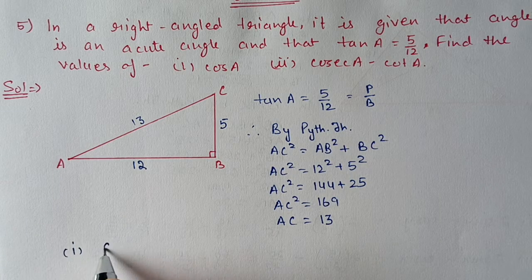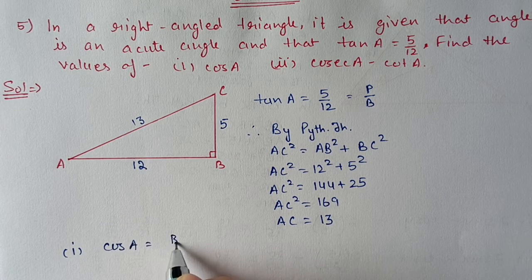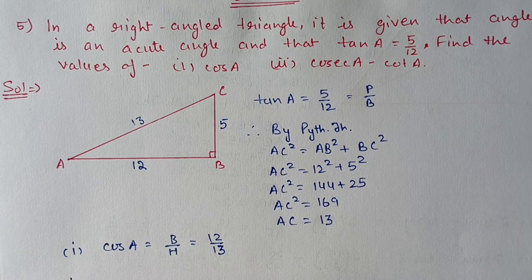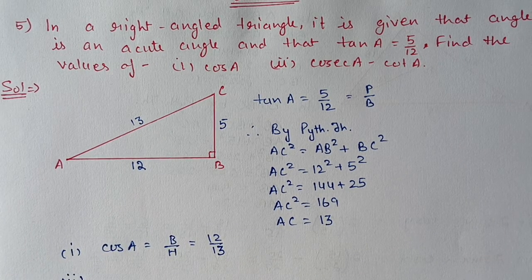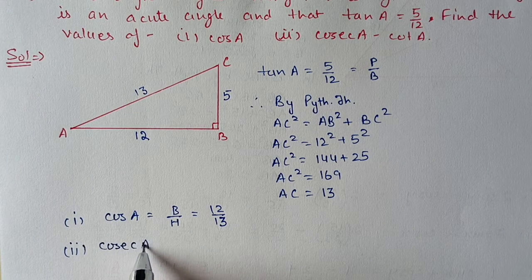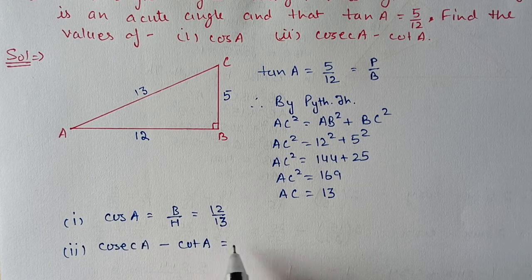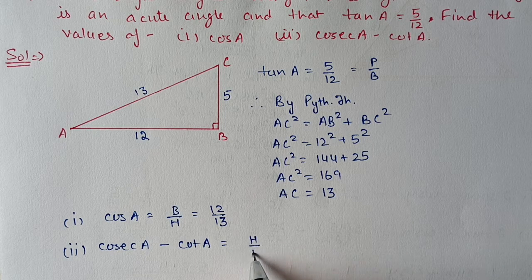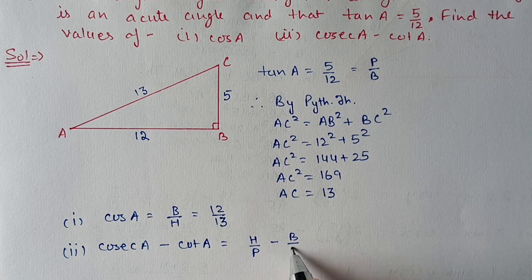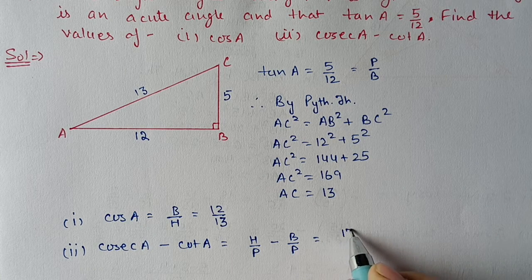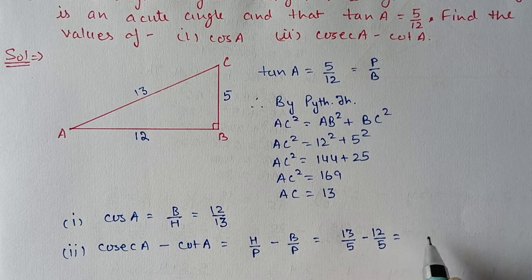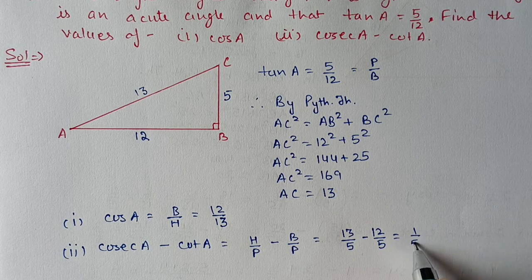Now we find cos A: cos A means base upon hypotenuse, base is 12 and hypotenuse is 13, so cos A is 12 upon 13. Second, cosec A minus cot A: cosec means hypotenuse upon perpendicular and cot means base upon perpendicular. Hypotenuse is 13, perpendicular is 5, base is 12, so we get 13 minus 12, which equals 1 upon 5.